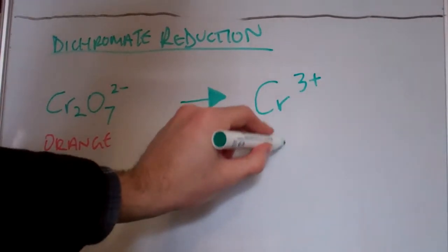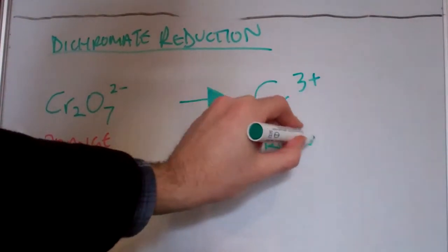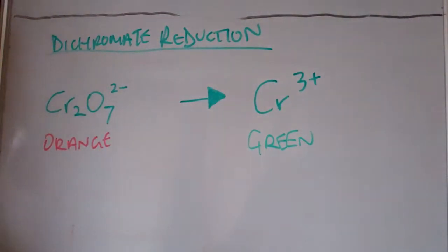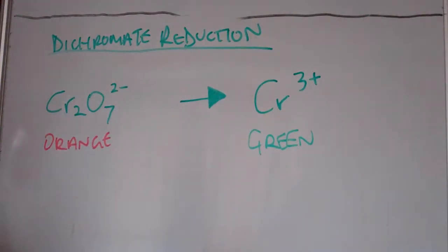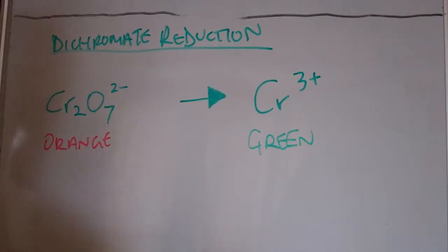So this is a handy physical observation that can be used to identify the presence of primary and secondary alcohols. And you can distinguish between primary and secondary and tertiary alcohols because like I said, tertiary alcohols are not oxidized by dichromate. Therefore the dichromate is not reduced, you should have no color change.